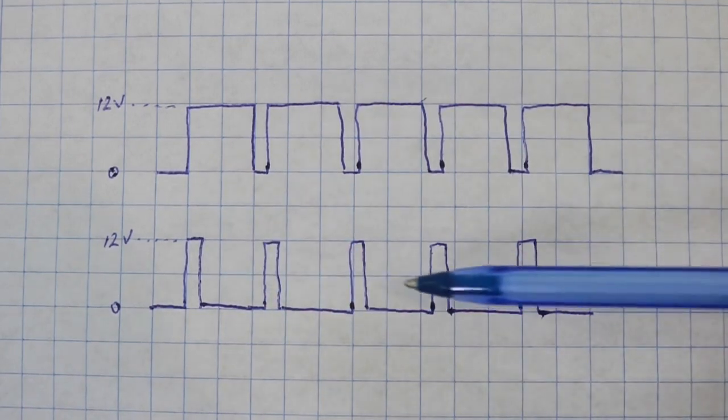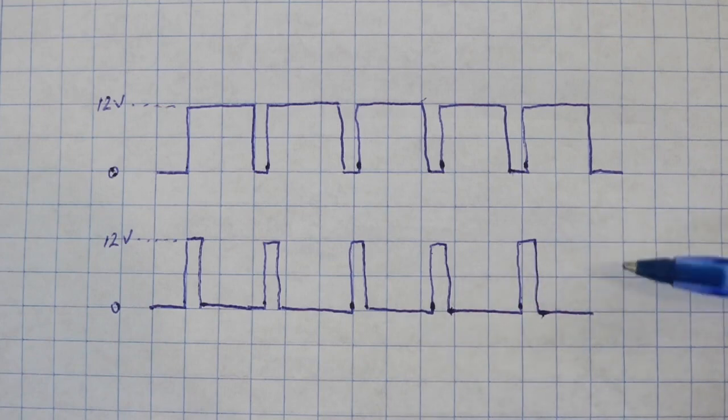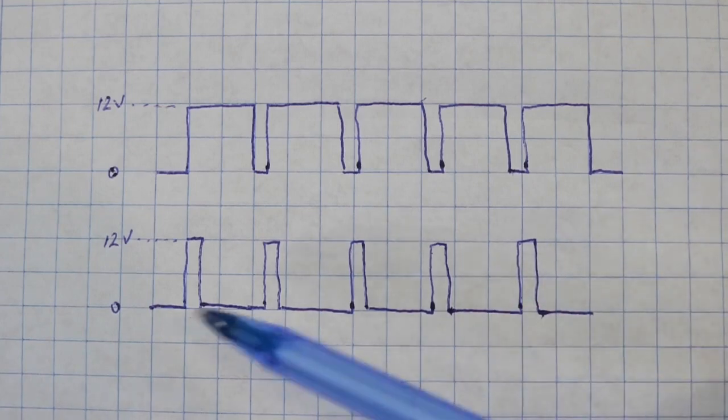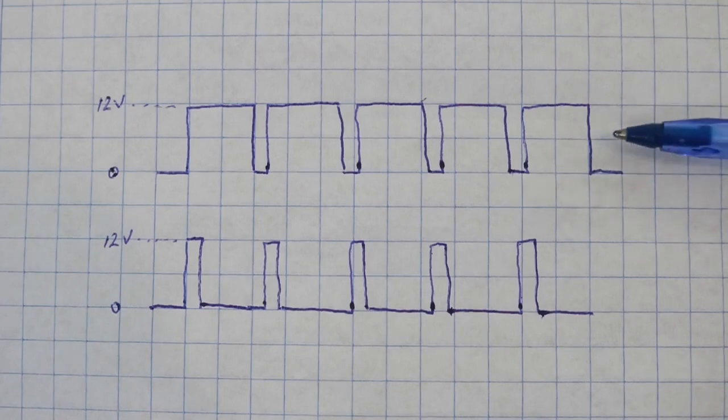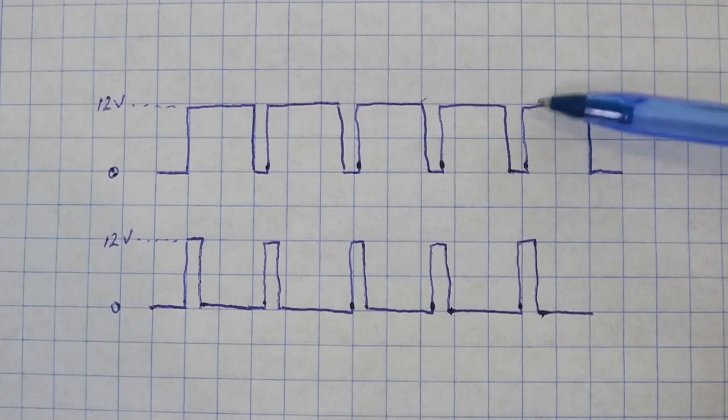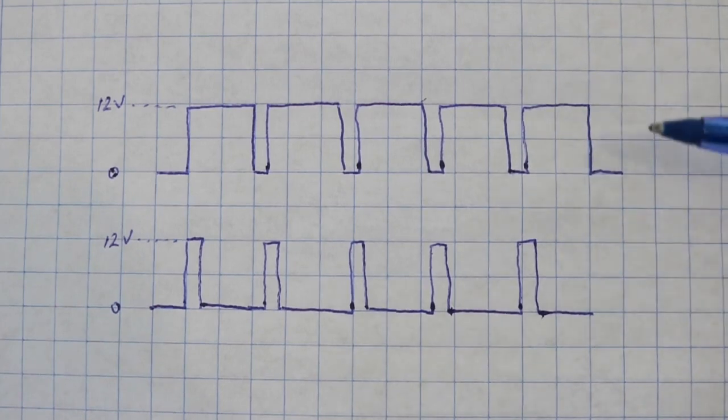So in this case the lamp brightness will be very low because most of the time it's off. In this other case the brightness will be high because most of the time it is on, and we can vary continuously from these two extremes using the potentiometer.